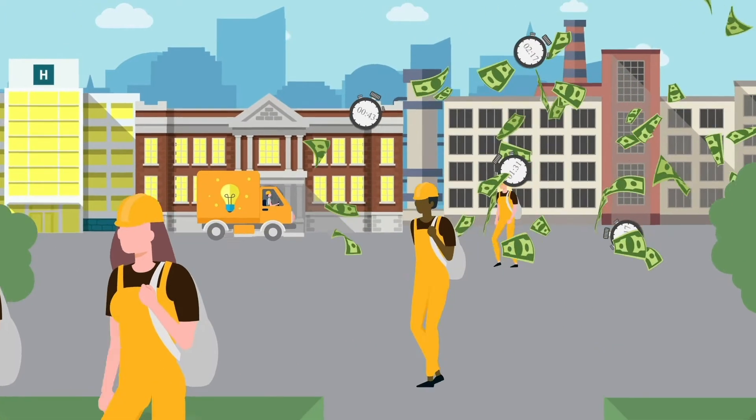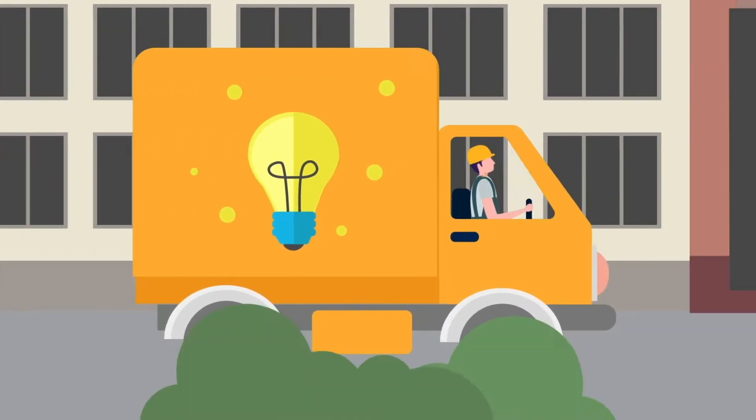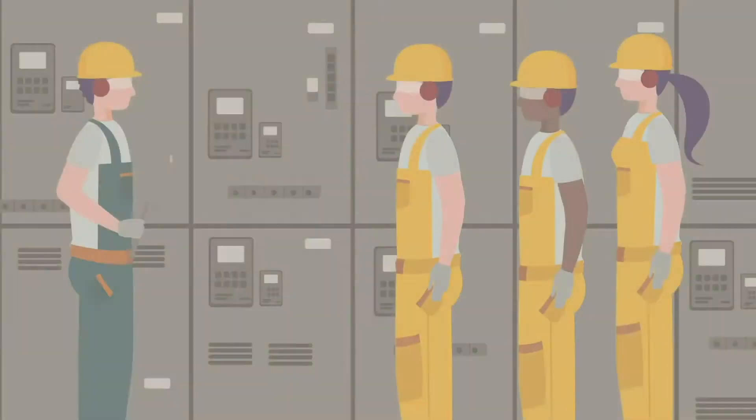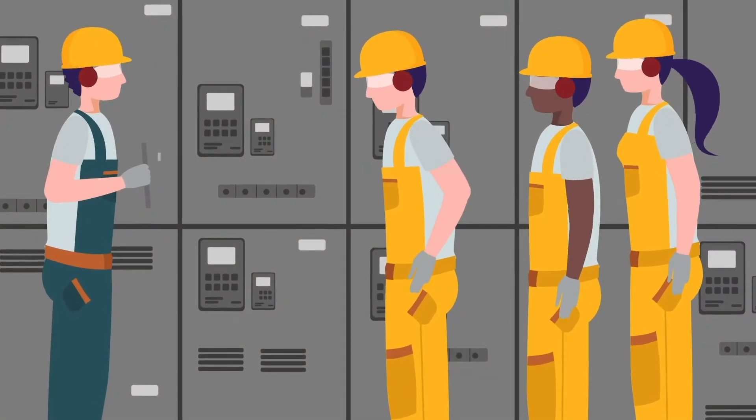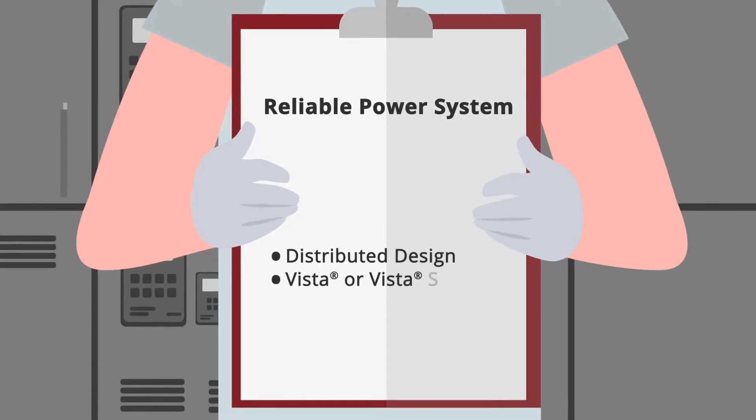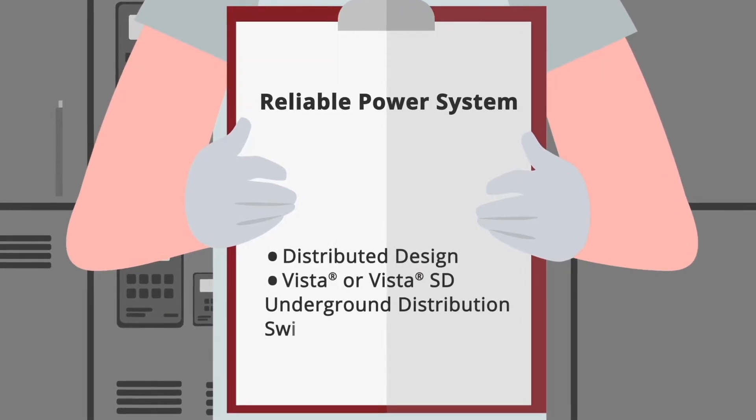With reliable power a key part of your facility's operations, it's critical to find a better alternative. You need two elements to build a reliable power system: a distributed design and SNC's Vista or Vista SD underground distribution switchgear.